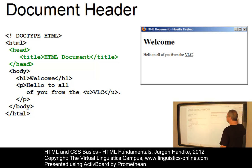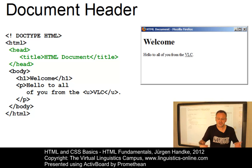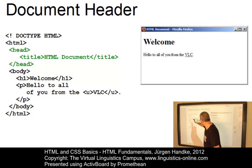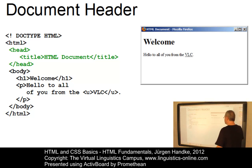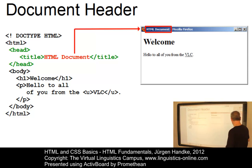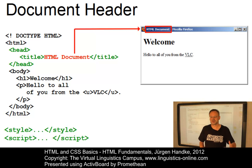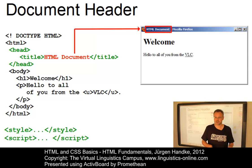Let us look at the header first. The document header, delimited by the tags 'head' and 'end of head', describes the central properties of the HTML document. It serves as a container for various additional tags, including the title tag. The title tag, a container tag, defines the title of the document — for example, 'HTML document' — and this title is normally displayed in the browser's title bar. Further tags within the document header include the style tag, which allows us to define particular styles such as text styles, font size, and font types; or the script tag, which allows us to insert instructions from script languages such as JavaScript.